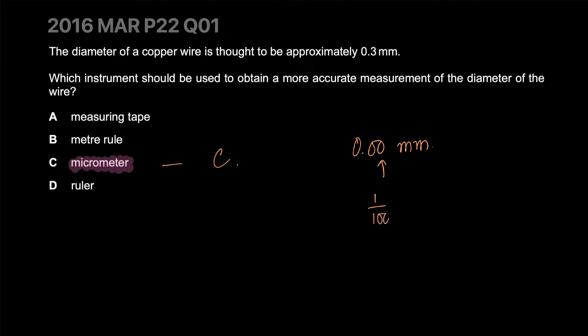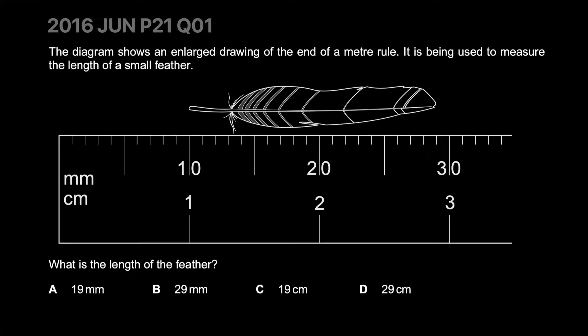The diagram shows an enlarged drawing of the end of a meter rule being used to measure the length of a small feather. One end is at 10 millimeters and the other end is at 29 millimeters. So the length of the wire becomes the difference of these two values - 19 millimeters. The answer is A.